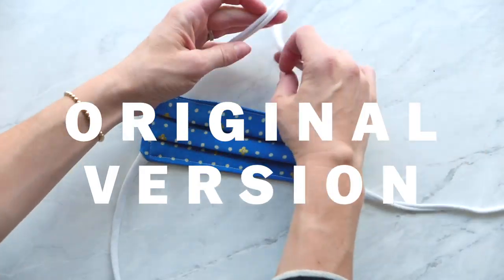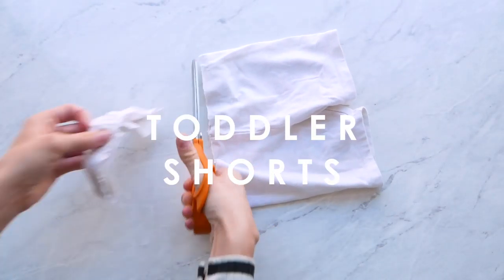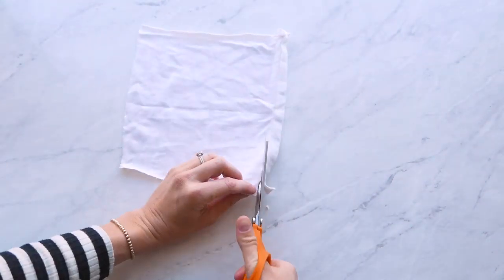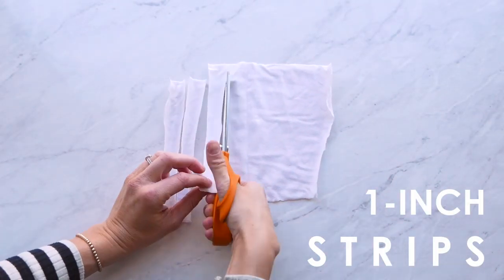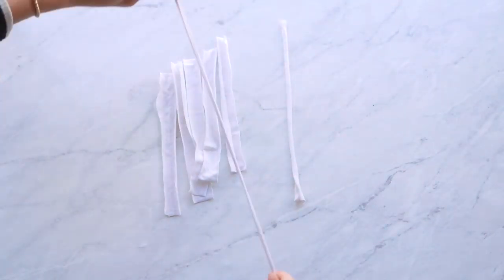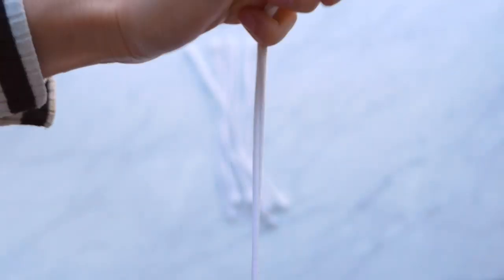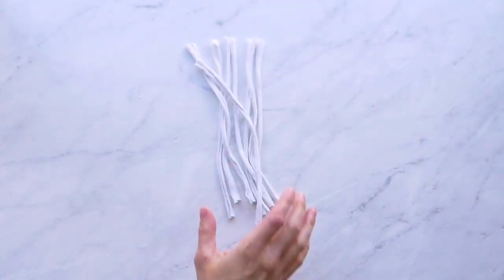So the first thing we're going to do is make these ties. This is a really easy trick. Just find an old pair of leggings. I have these old bike shorts that don't fit Charlotte anymore and cut them into one inch strips. This sort of stretchy jersey fabric will roll if you pull on it. So just give each one a really good tug and watch it just completely coil into like the perfect stretchy soft elastic cord.